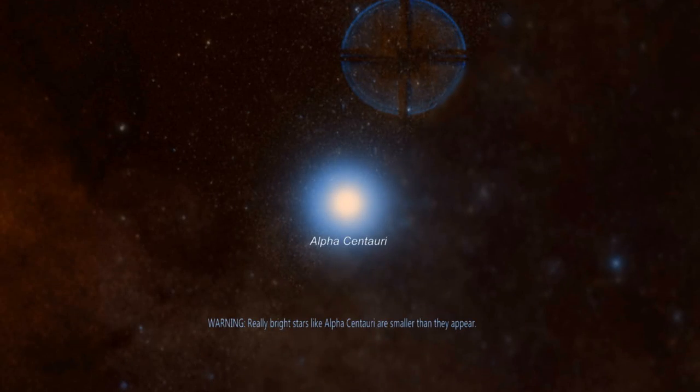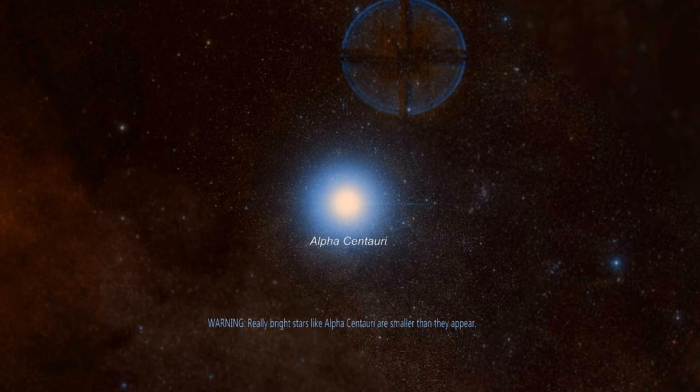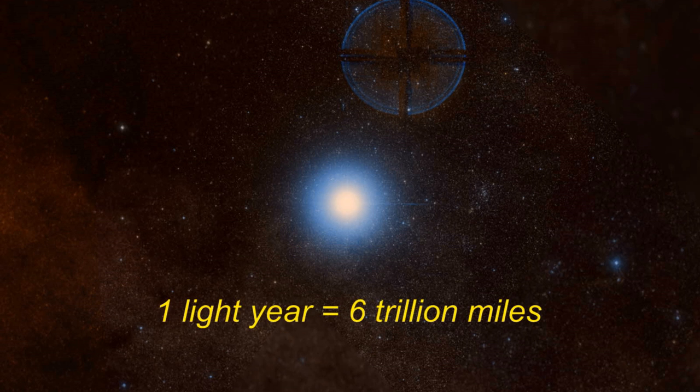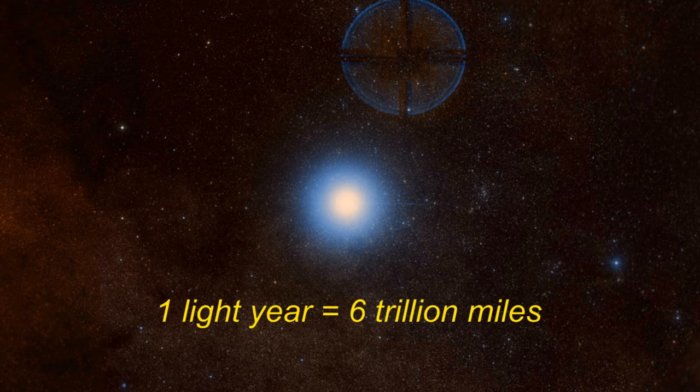but it's nothing compared with the distance to the next nearest bright star, Alpha Centauri, about four light years from Earth. A light year is the distance that light, the fastest thing known to us, can go in a year, which is about six trillion miles. Keep that in mind when we talk about light years later on.